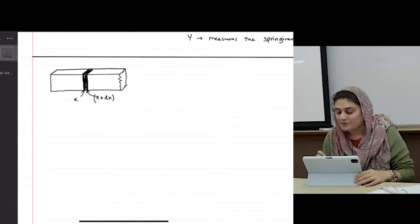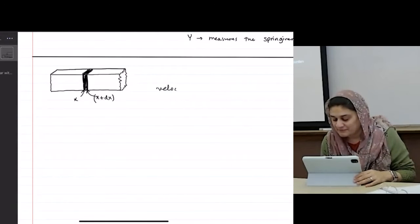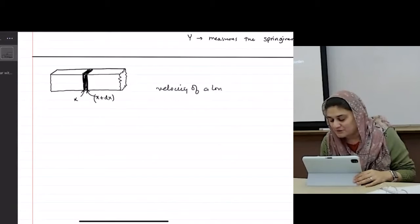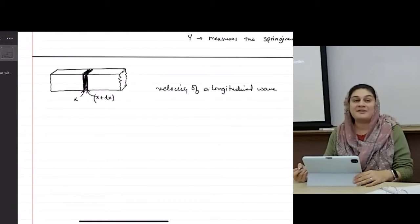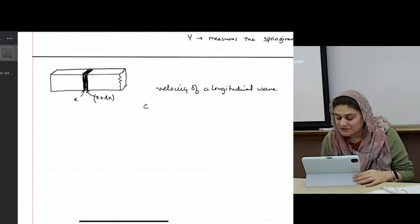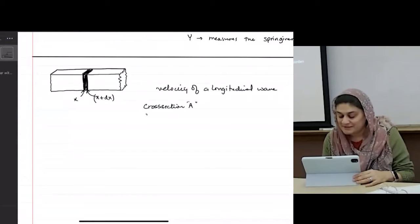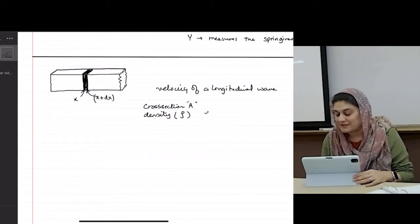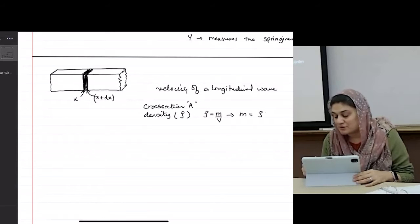Suppose I want to calculate the velocity of a longitudinal wave as the waves pass through these. So suppose my cross section is A, my density of the rod is ρ. Can I also call density as mass over volume? May I also write mass as ρ A Δx?